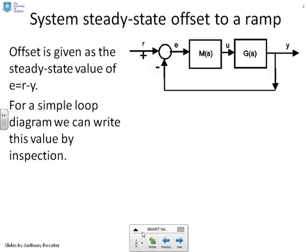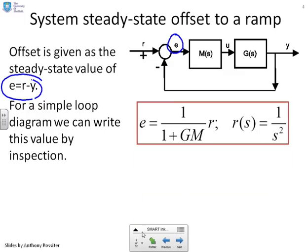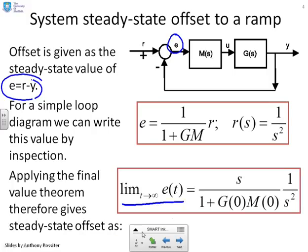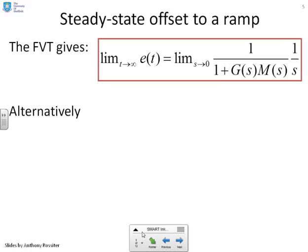The offset is given by the steady state value e equals r minus y. For a simple loop diagram, we find this using the final value theorem. We write e equals 1 over (1 plus g(s)·m(s)) times r, where r is 1 over s squared. Applying the final value theorem gives the limit as s goes to 0 of s over (1 plus g(s)·m(s)) times 1 over s squared. We can cancel one s, reducing to 1 over (1 plus g(s)·m(s)) times 1 over s.